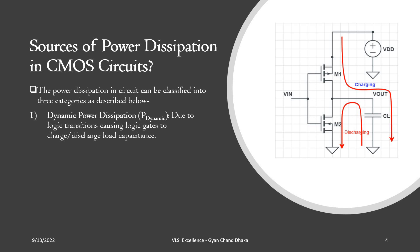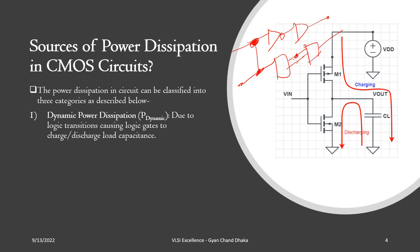The first source of power dissipation in CMOS circuits is dynamic power dissipation. As the name suggests, dynamic power dissipation occurs when there is activity happening in the circuit — that means when the device is in functional mode and some processing is happening. In VLSI chips we have circuits such as AND gates and buffers, and whenever there is processing happening, these nodes are either charging or discharging based on the functionality of the circuit.